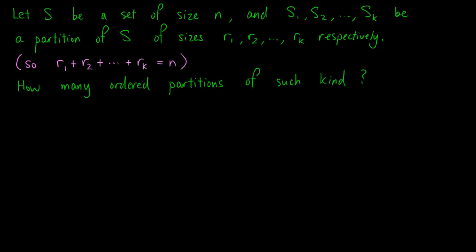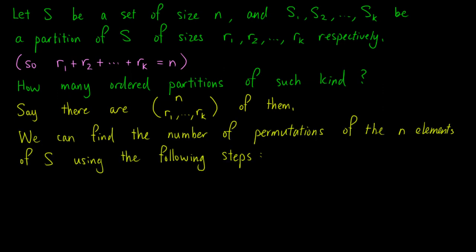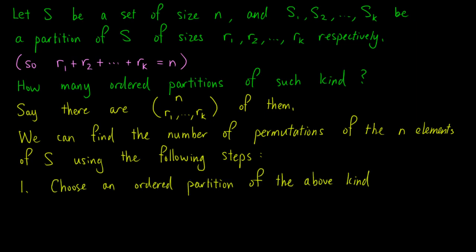We want to find the number of ordered partitions of such kind. We use the following notation to denote the number of such partitions: a large bracket with N at the top and R1 up to Rk at the bottom. We are going to find the number of permutations of the N elements of S. Firstly, we choose an ordered partition of the above kind, and the number of ways to do so is exactly the number of ordered partitions we want to find.